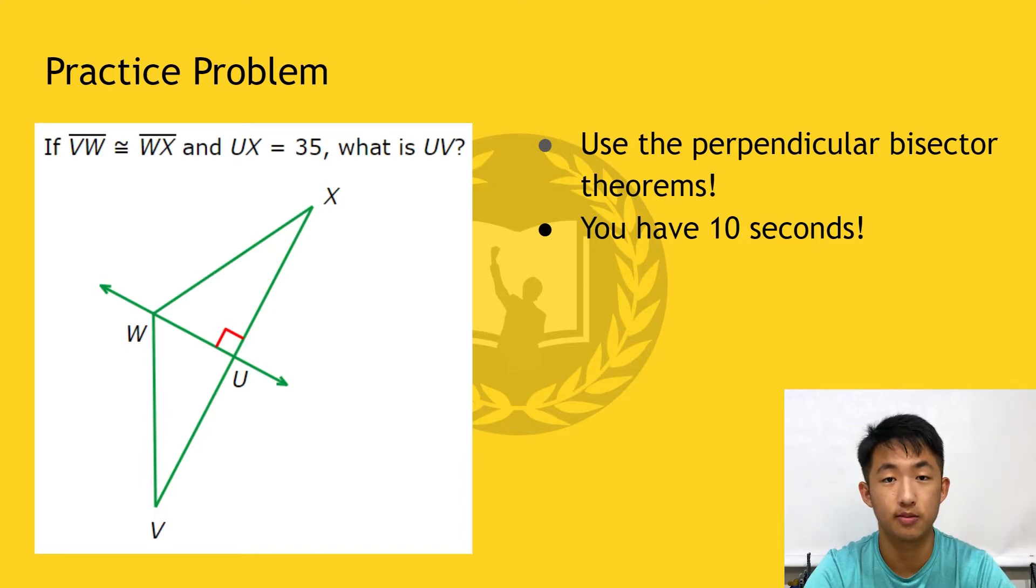If segments VW and WX are congruent and segment UX has a length of 35, what is the length of segment UV? Again, try to use the perpendicular bisector theorems, whether it be the normal theorem or the converse. You have 10 seconds. Time starts now. Good luck.